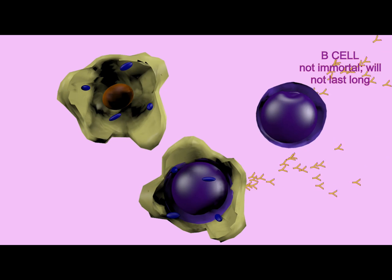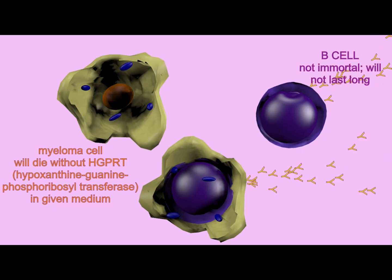Sometimes, the difference between forming a precipitate or not depends on whether one is using monoclonal or polyclonal antibodies.